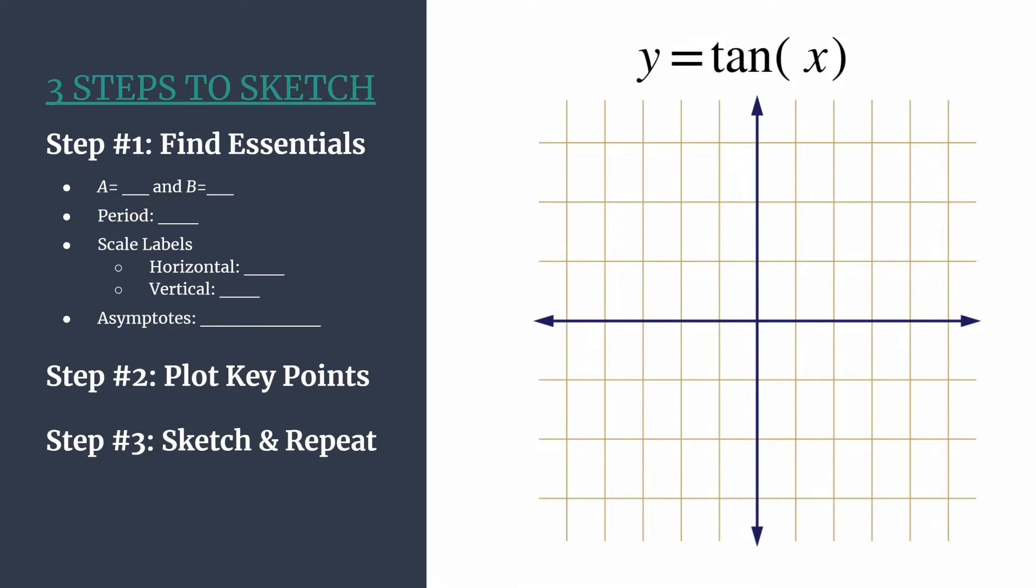So first, a and b. Well, we know a is just the coefficient in front of tangent, so it's an understood one. And b is the coefficient in front of x, also an understood one in this case.